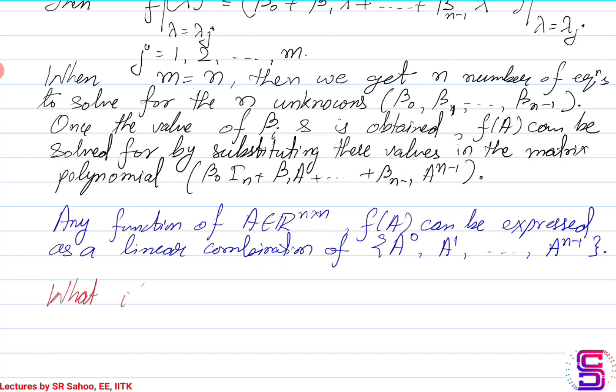What if m is less than n? m can never be greater than n — you cannot possibly have m number of distinct eigenvalues greater than the degree of the problem. So either m equals n or m is less than n. We have seen what to do for m equal to n; now we will see what we need to do when m is less than n.